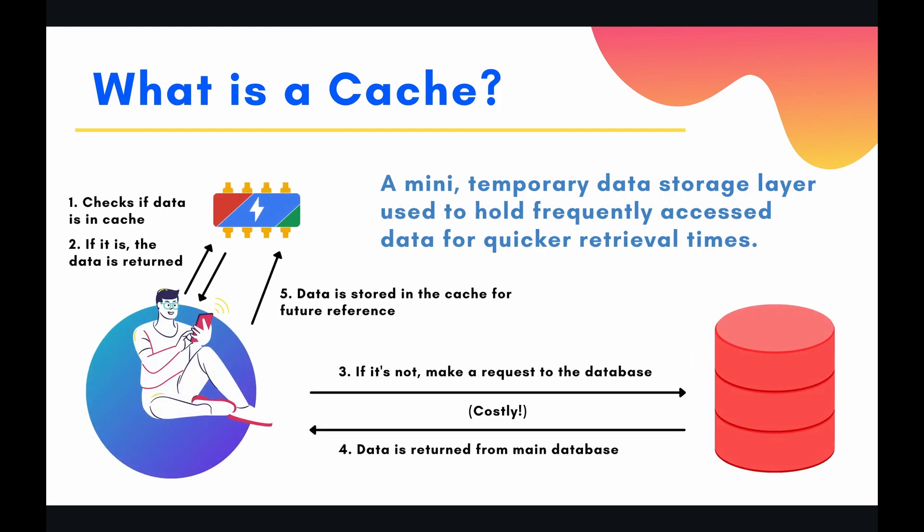So let's investigate that question a little bit more in depth: what is a cache? You can think of a cache as basically like a mini database. More formally, it is a mini temporary data storage layer used to hold frequently accessed data for quicker retrieval times. I want to put emphasis on that last phrase — quicker retrieval times.